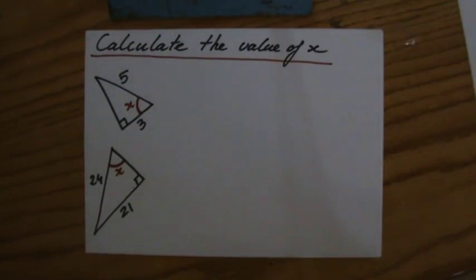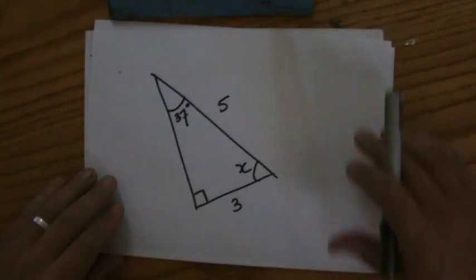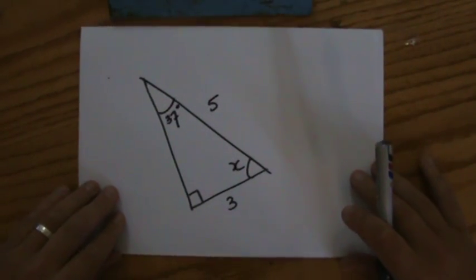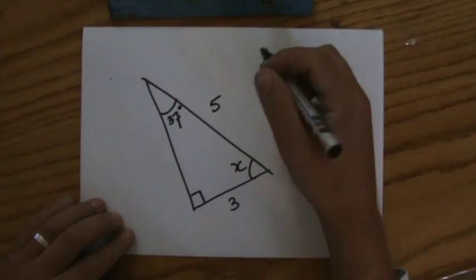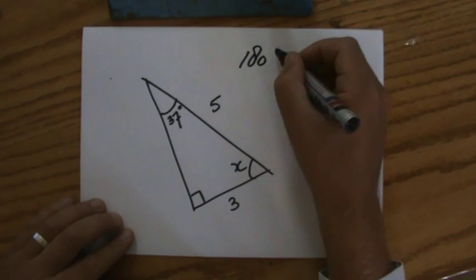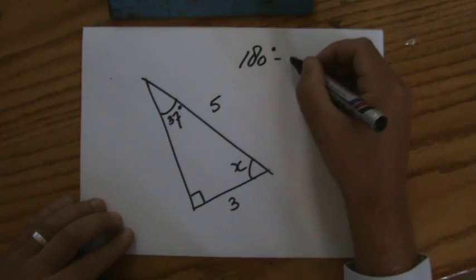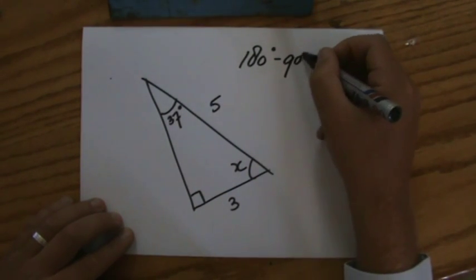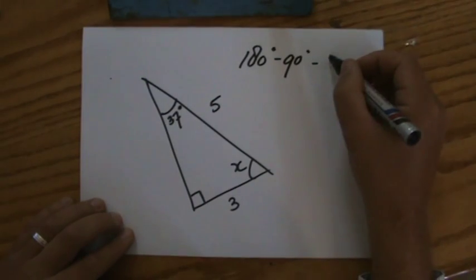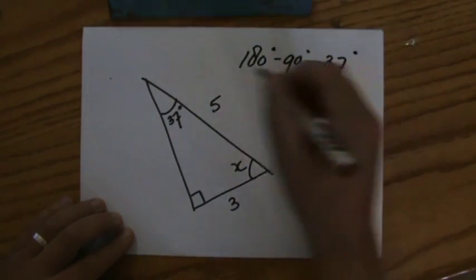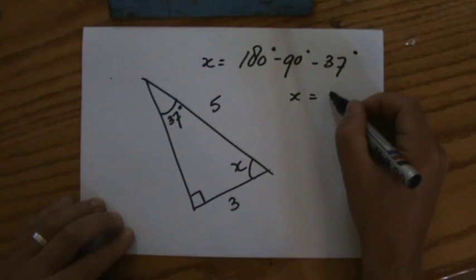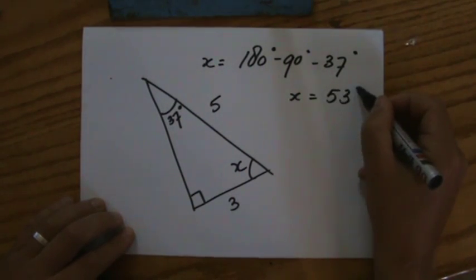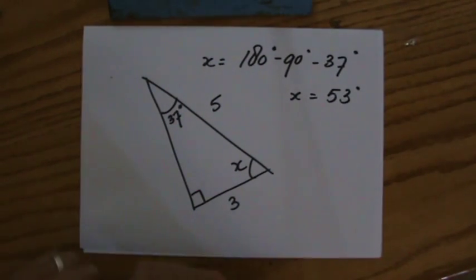But quickly — and that's why we always analyze questions properly — if this were the situation and I had to calculate x, I would simply do 180 degrees minus 90 degrees minus 37 degrees. So x would equal, if you do that properly, 53 degrees.